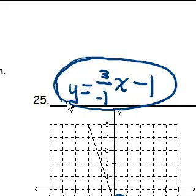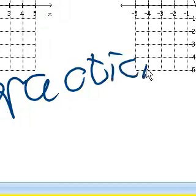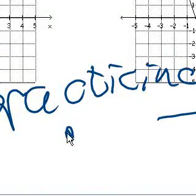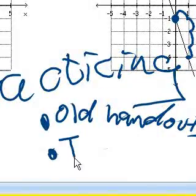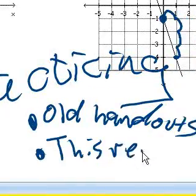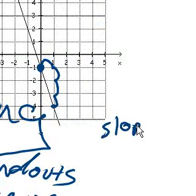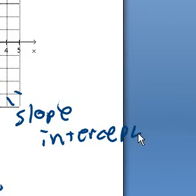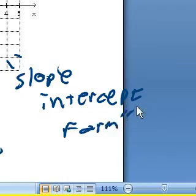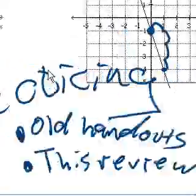And there you have it. I would highly suggest practicing these problems. Practice from old handouts. Practice this review. Go on YouTube. Go online. Search for terms like slope-intercept form. That would be a good search term. Search on slope. Search on graphing. Anything that can reinforce these ideas that are in this exam.